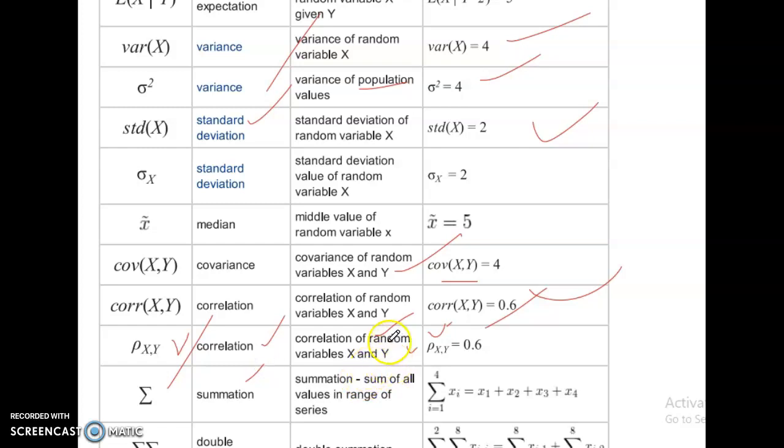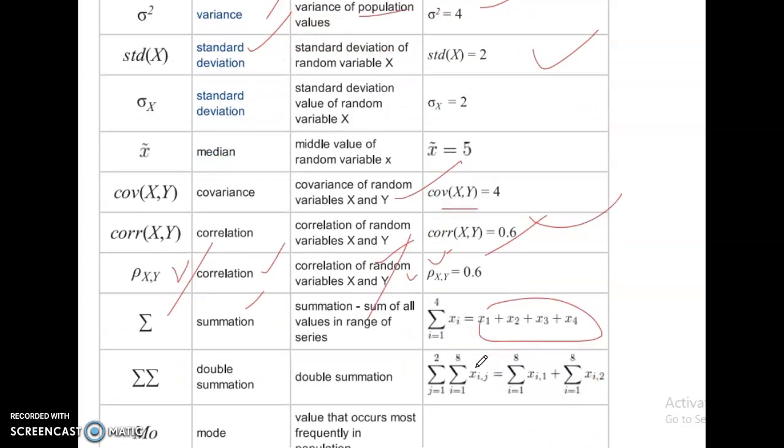Summation. Sum of all values in the range of series. i is equal to 1 to 4, so xi is equal to x1, x2, x3, x4 to be added. Summation, double summation. j equal to 1 to 2, i equal to 1 to n.